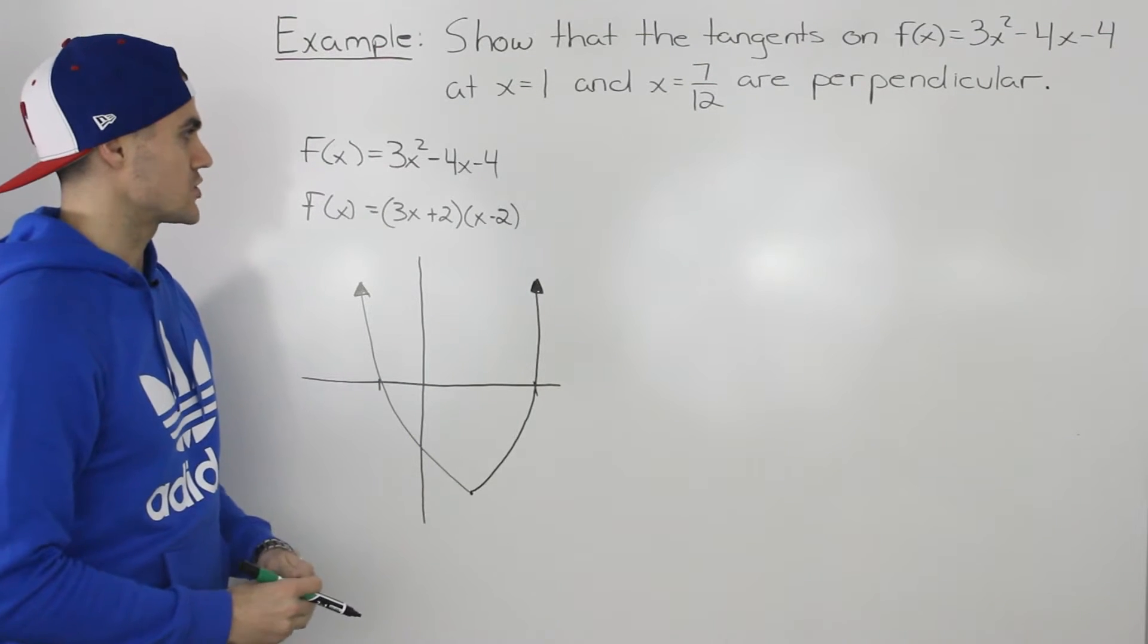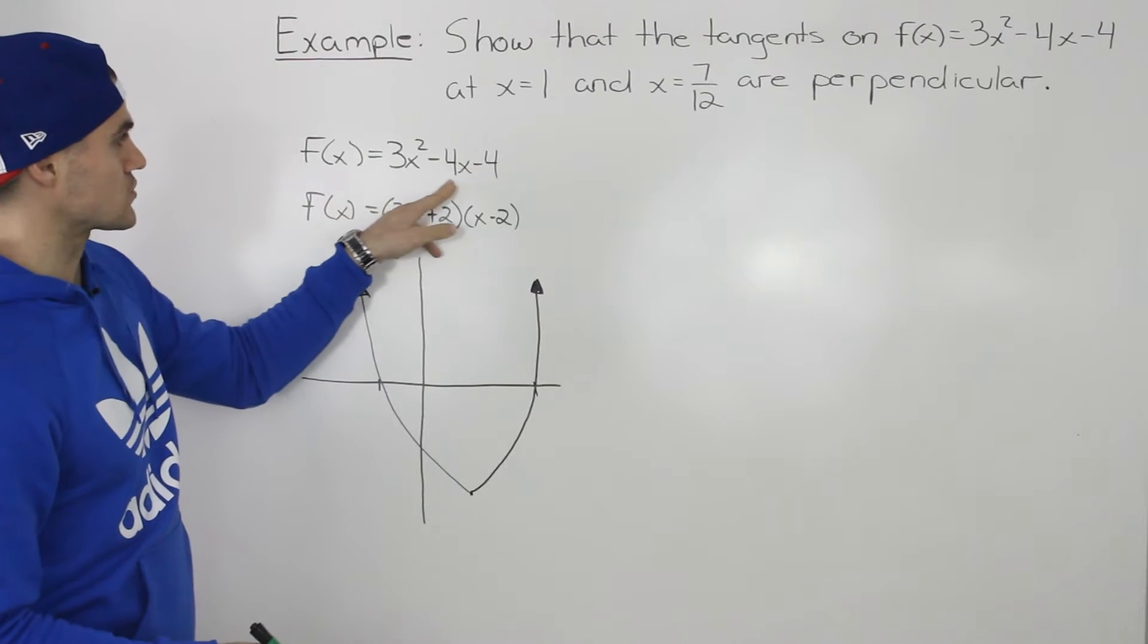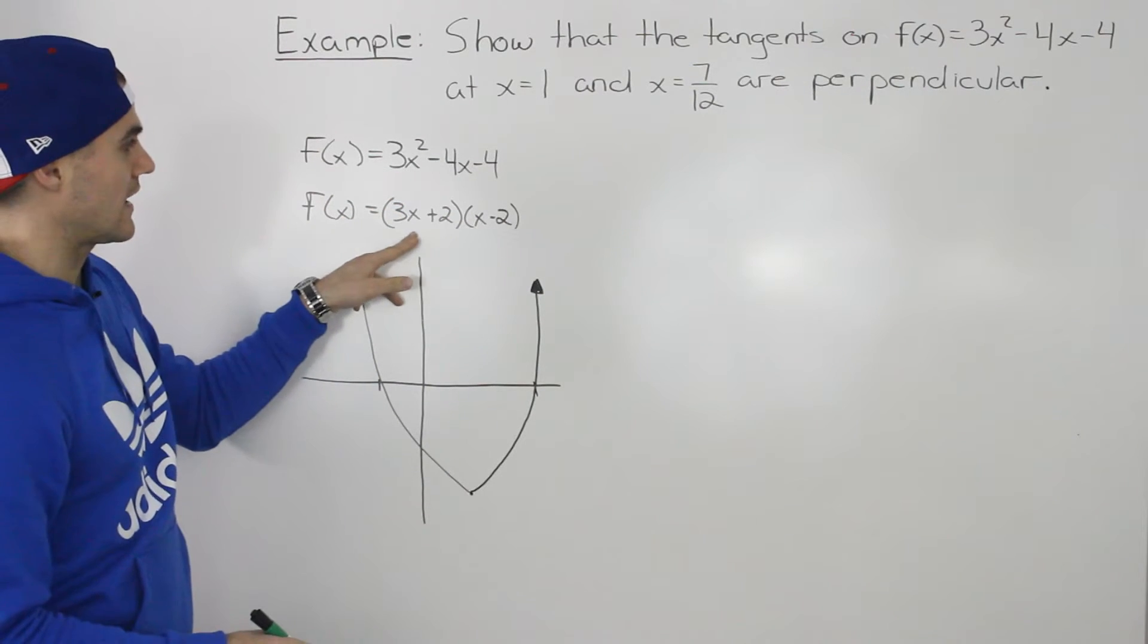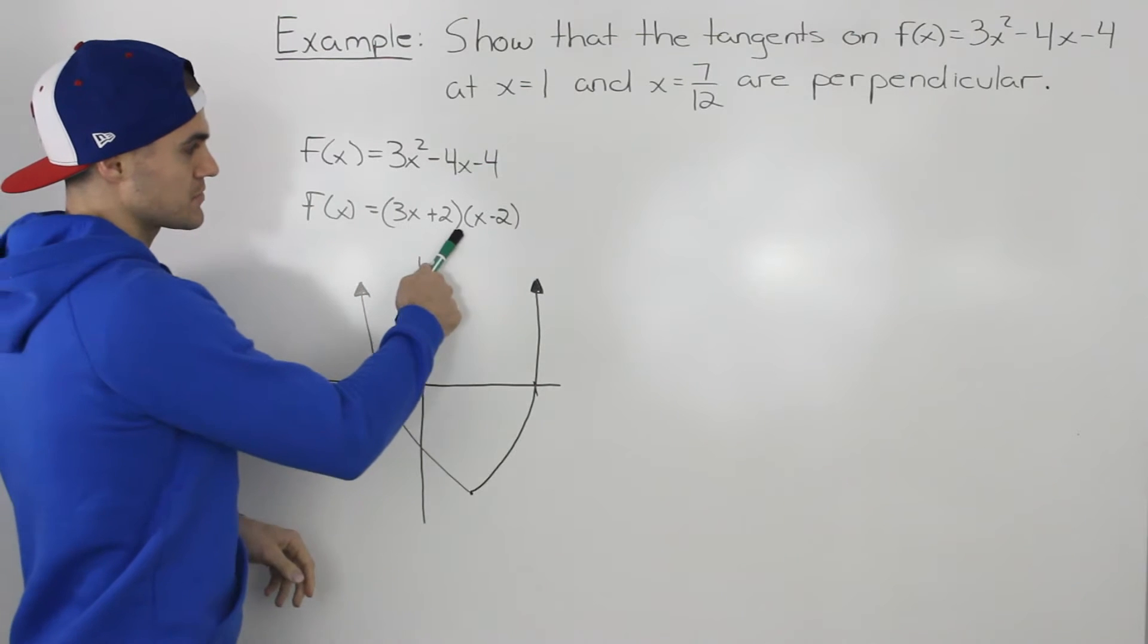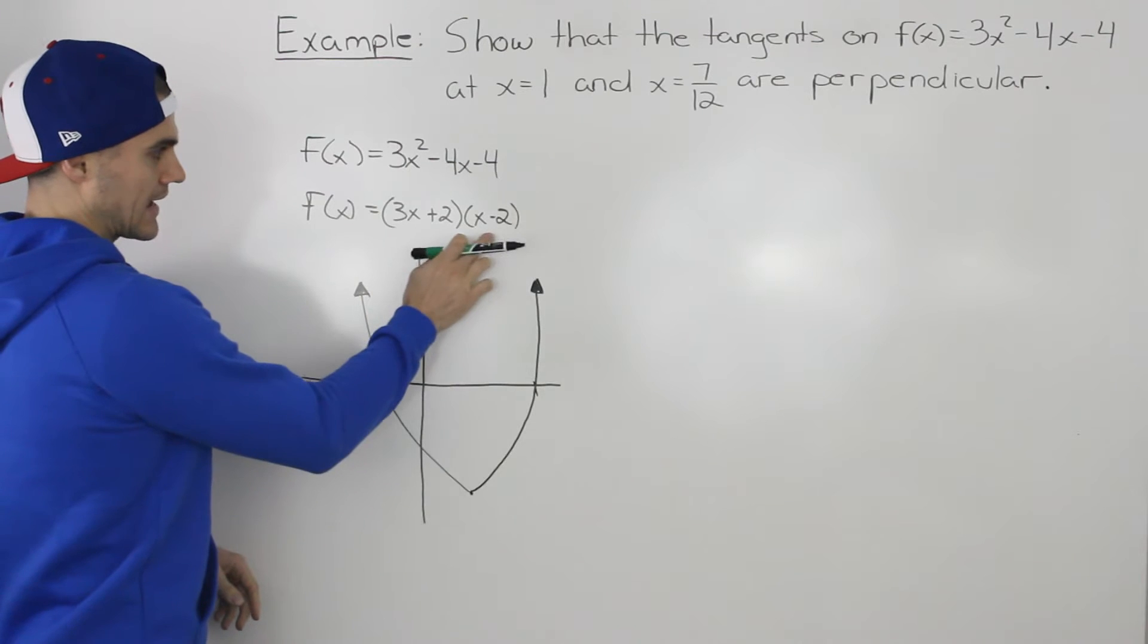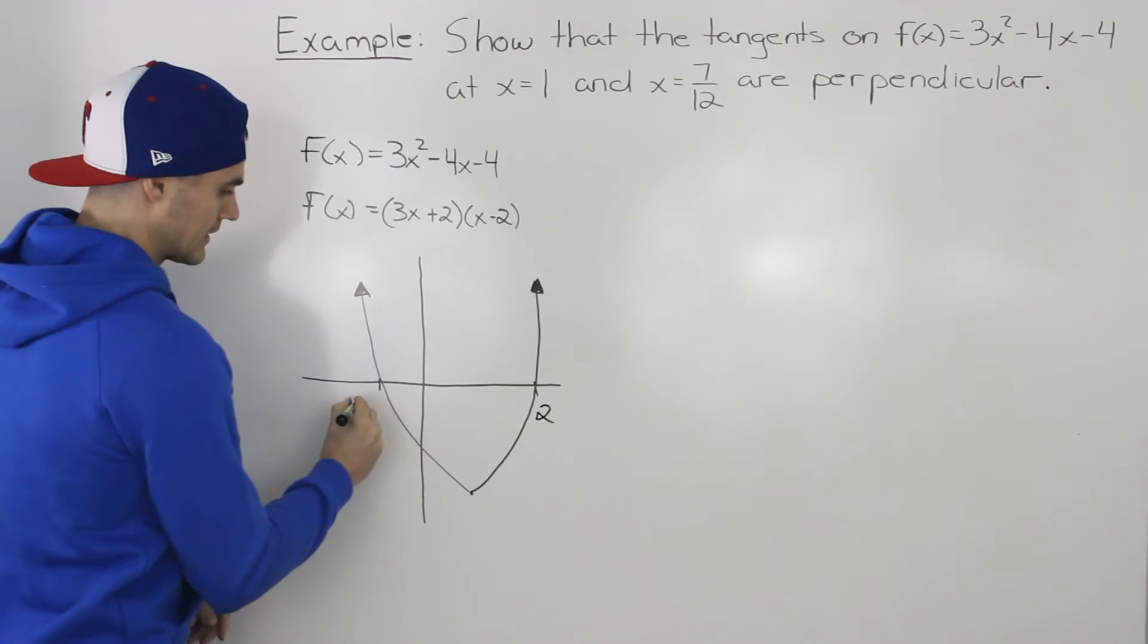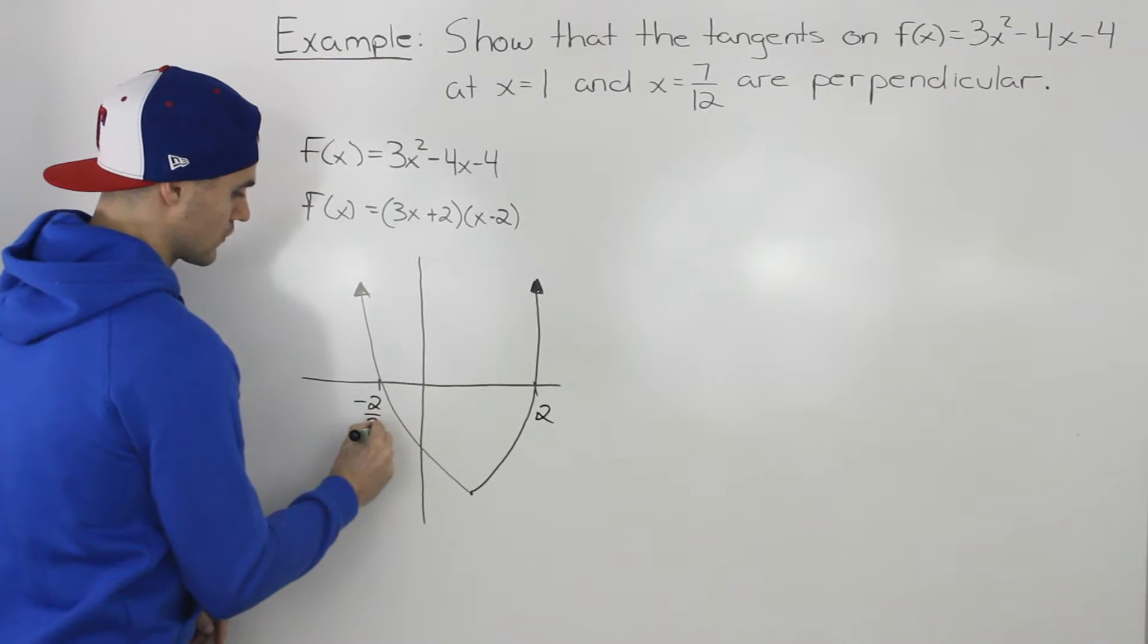Before we get into the mechanics of this question, let's show visually what's going on. If we take that function 3x squared minus 4x minus 4, that actually factors smoothly into 3x plus 2 and x minus 2. So it's a parabola that opens up and it has x-intercepts of positive 2 and negative 2 over 3.